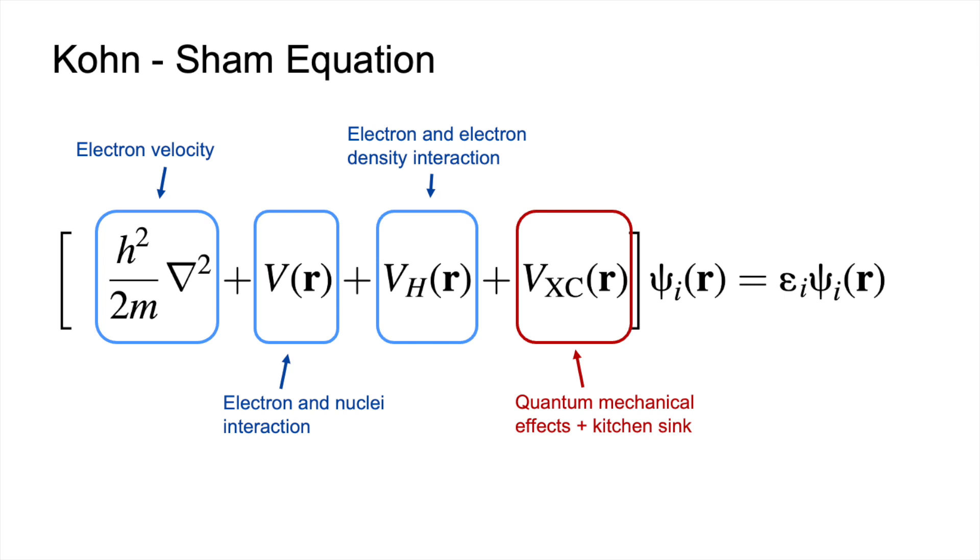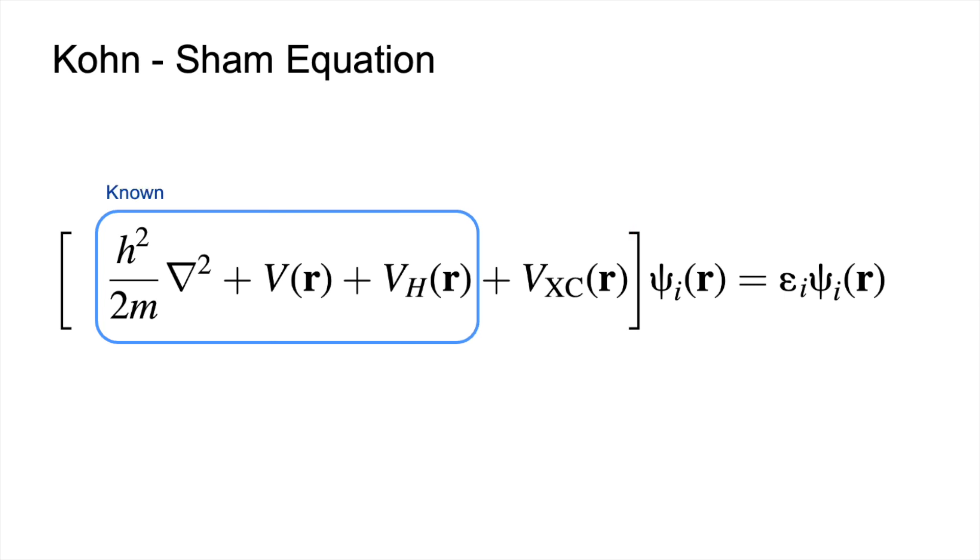And then finally, we have the exchange correlation potential. And this models quantum mechanical effects and a bunch of other things. It's kind of like a kitchen sink potential. Now one thing to note is that the three terms on the left are all known.